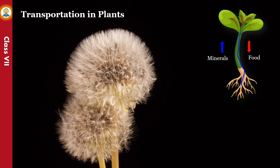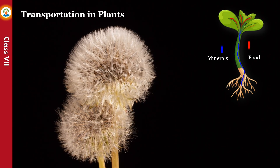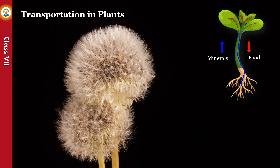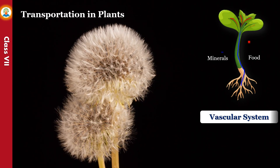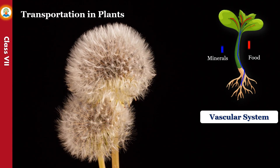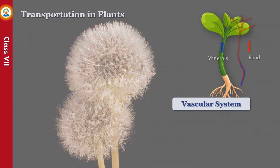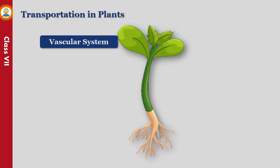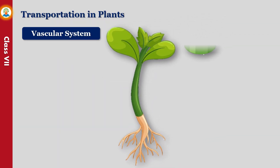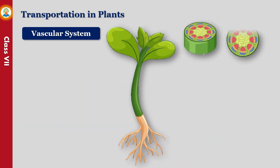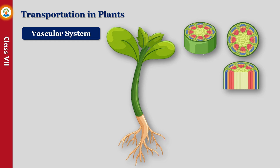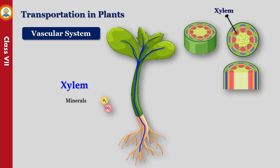This system is called the vascular system. The vascular system consists of two tissues: xylem and phloem. Xylem is the tissue which carries minerals and water from roots to the other parts of the plant.